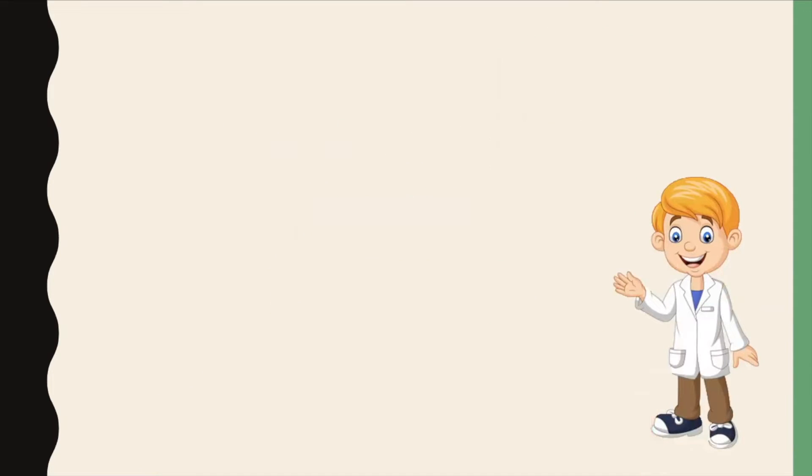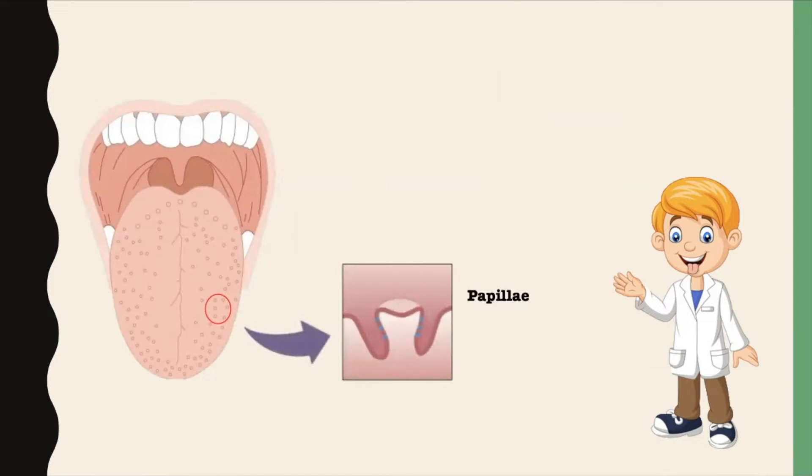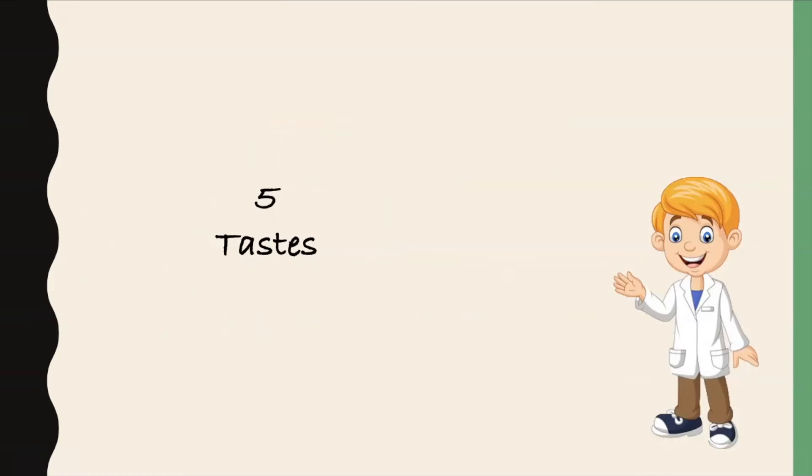So, just like Brainiac, I want you to stick out your tongue. If you're looking in a mirror or you have someone else nearby, you can see that there are little bumps covering the surface of the tongue. These bumps are known as papillae, and they contain taste buds, which have special sensors dedicated to responding to different tastes.